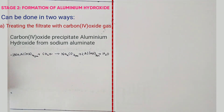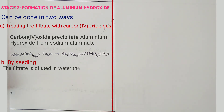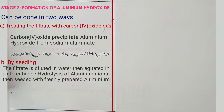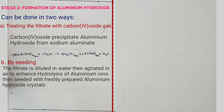The other way of forming aluminium hydroxide is by what they call seeding, whereby the filtrate is first diluted in water, then agitated in air to enhance hydrolysis of aluminium ions, then seeded by freshly prepared aluminium hydroxide crystals.